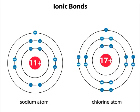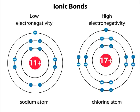The ability of an atom to attract electrons — its electronegativity — might be so strong that the atom does not share electrons with other atoms, but instead strips electrons away from other atoms. Chlorine has a high electronegativity, whereas sodium has a very low electronegativity.